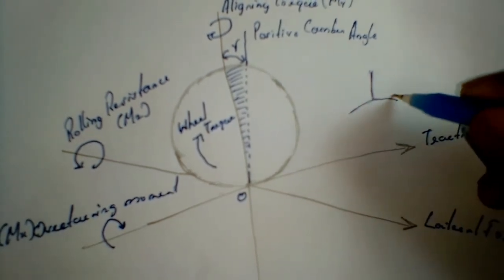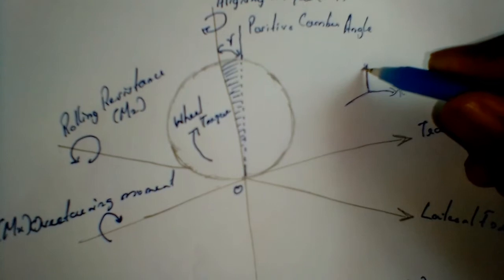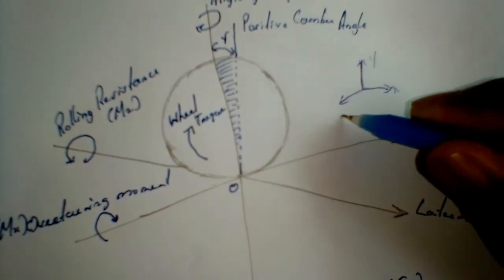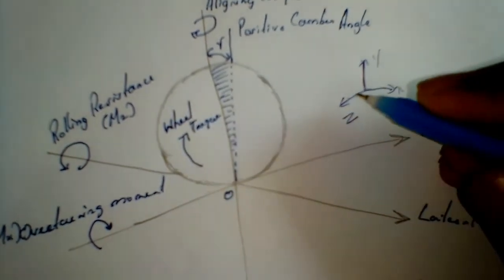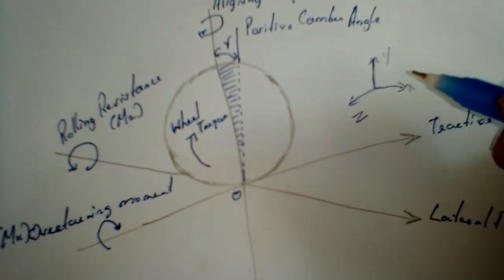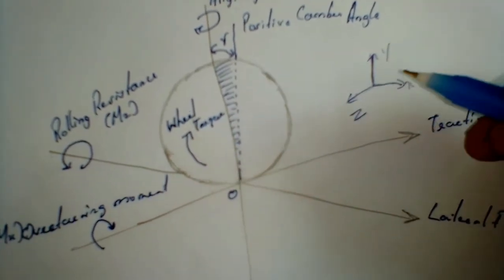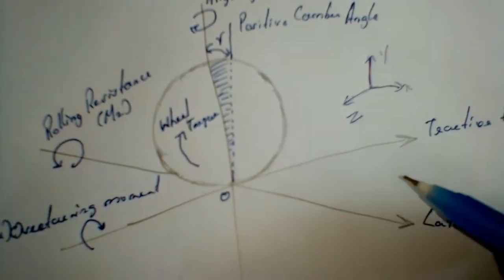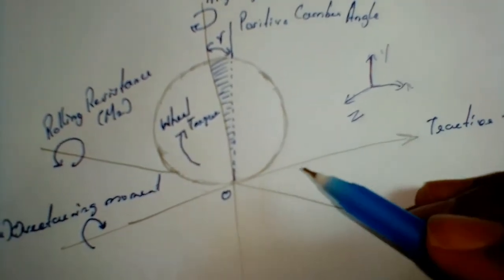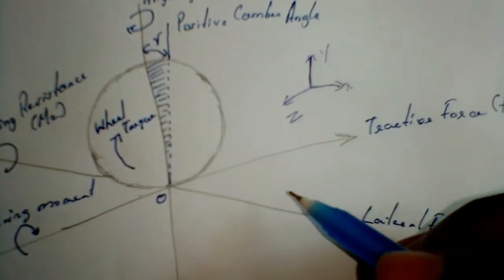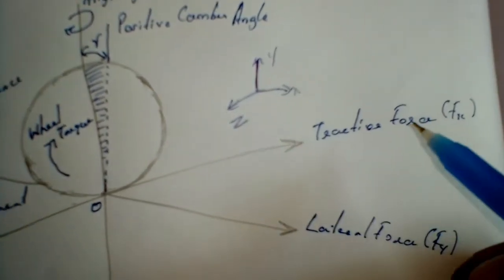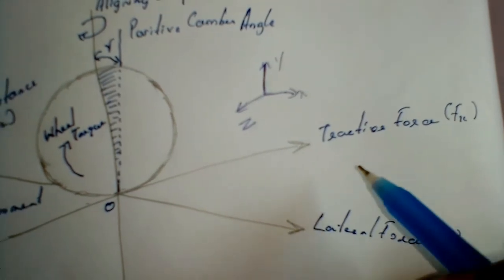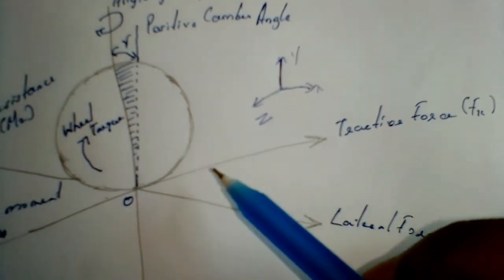There are three axes: X, Y, and Z. There are three forces and three separate moments in all these axes. In the X-axis there is a force called tractive force, as you can see here, and it is represented by F suffix X because it belongs to the X-axis.